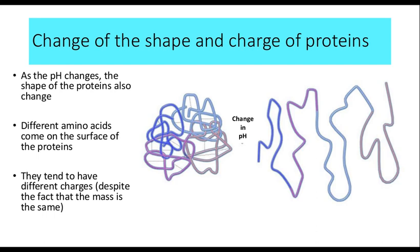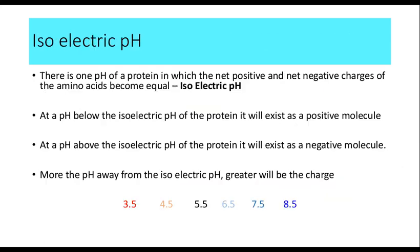There is a term called isoelectric pH. As pH changes, the charge of amino acids changes — some amino acids become positive, some become negative. The net charge of the protein is the sum of all positively and negatively charged amino acids. There is a specific pH called the isoelectric pH.